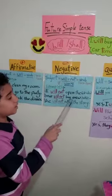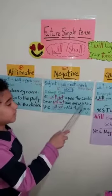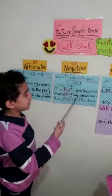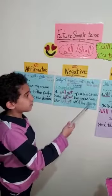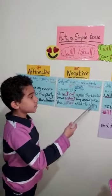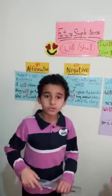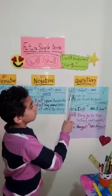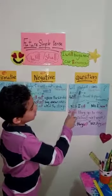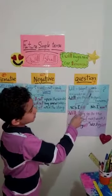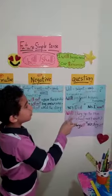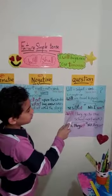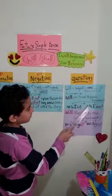'She will not read the story.' Now we will talk about the question form: 'will', then subject, then the verb in the base form. For example: 'Will you travel to Paris tomorrow?'